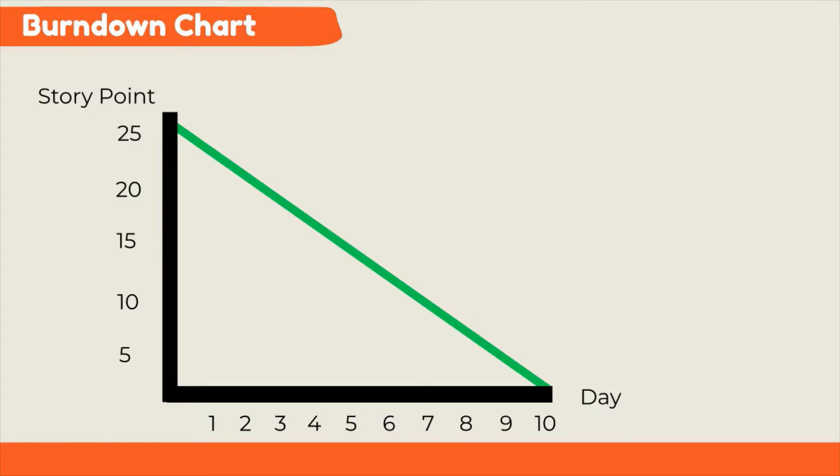During daily Scrum, the team will discuss how many story points they completed the previous day. Then, draw the line by removing the amount of story points completed. Sprint burndown will help the team see very quickly if they are on track or not.